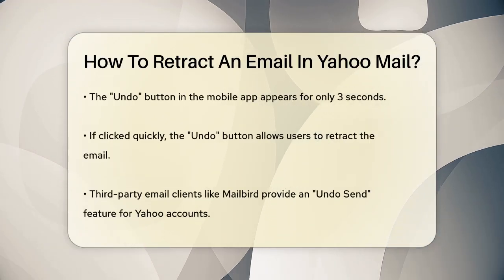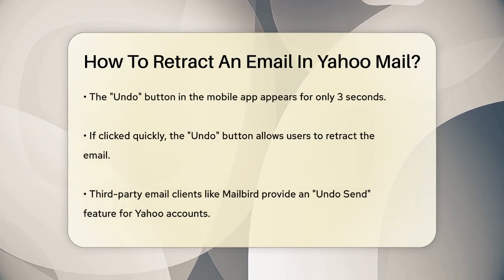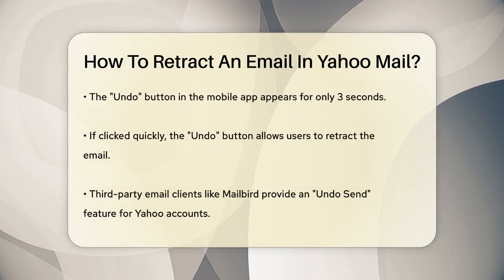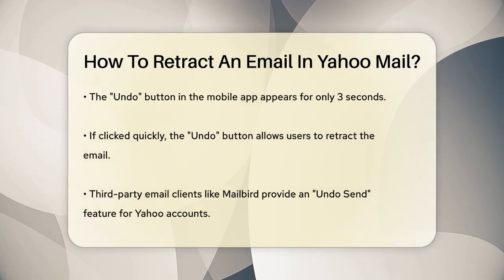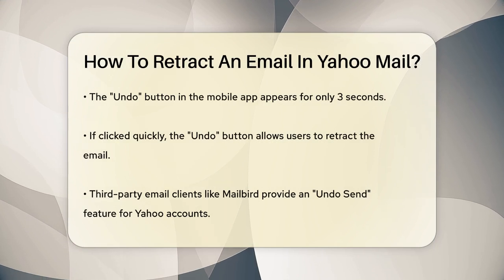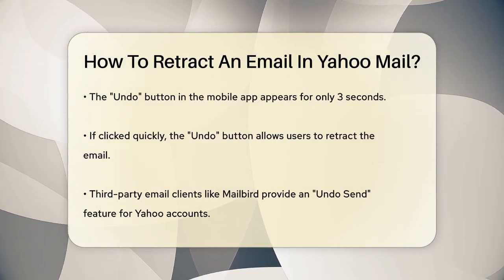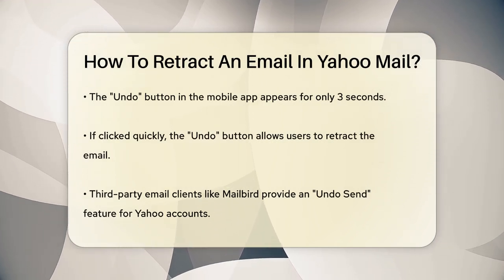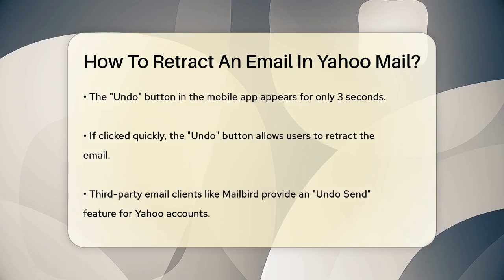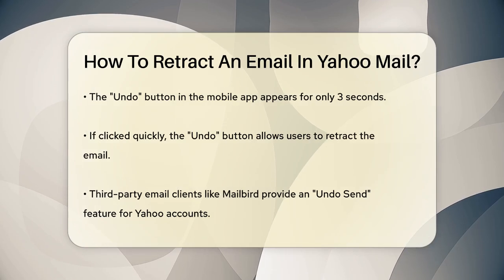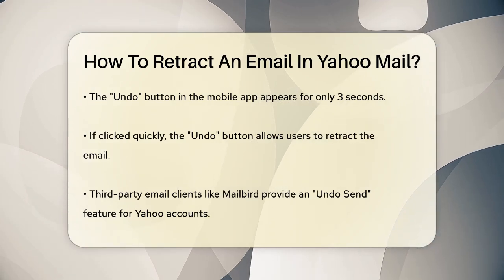If you're using the Yahoo Mail mobile app, you have a very short window to undo the send. After sending an email, a box will appear with an undo button that disappears in just 3 seconds. If you act quickly and click this button, you can retract the email.